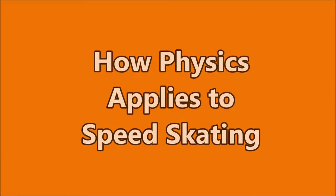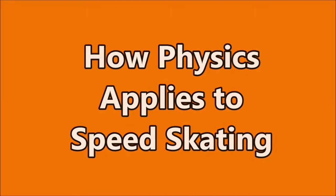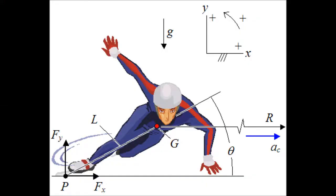Newton's first law applies to the start of the race while at rest. Speed skaters dig their front foot into the ice with the tip and plant their back blade, exemplifying that an object at rest will remain at rest unless acted on by another force. Their start exhibits Newton's second law by the equation force equals mass times acceleration — the more force they use at the start, the more they will accelerate. Newton's third law also applies when the skater exerts force on the ice and the ice pushes and exerts a force back on the skater.